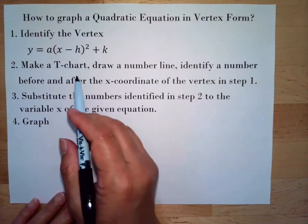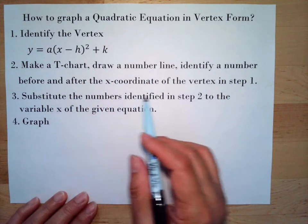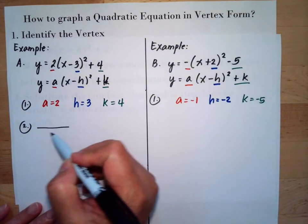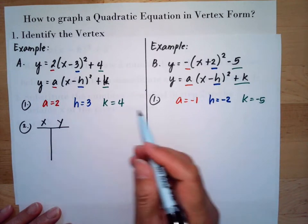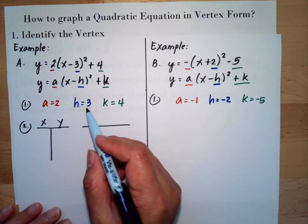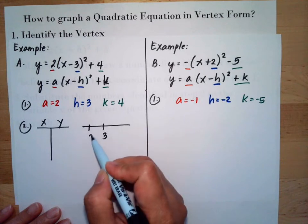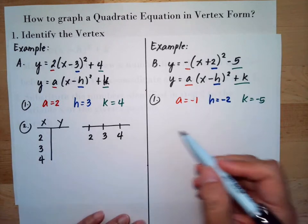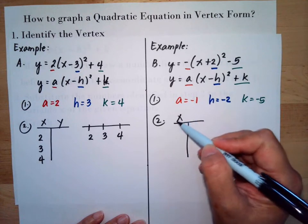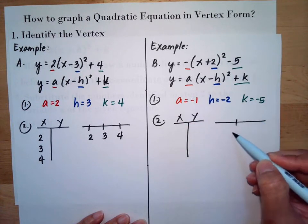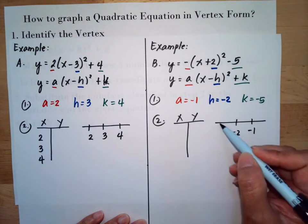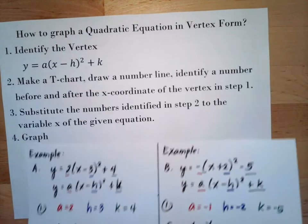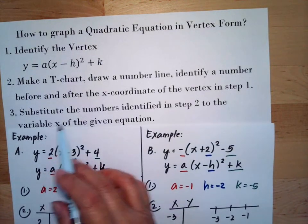The next step is to make a t-chart: draw a number line and identify a number before and after the x-coordinate of the vertex from Step 1. For Example 1, h is 3, so we use 2, 3, and 4. For Example 2, h is negative 2, so we draw the number line with negative 3, negative 2, and negative 1. We set up an x-and-y t-chart for each example.